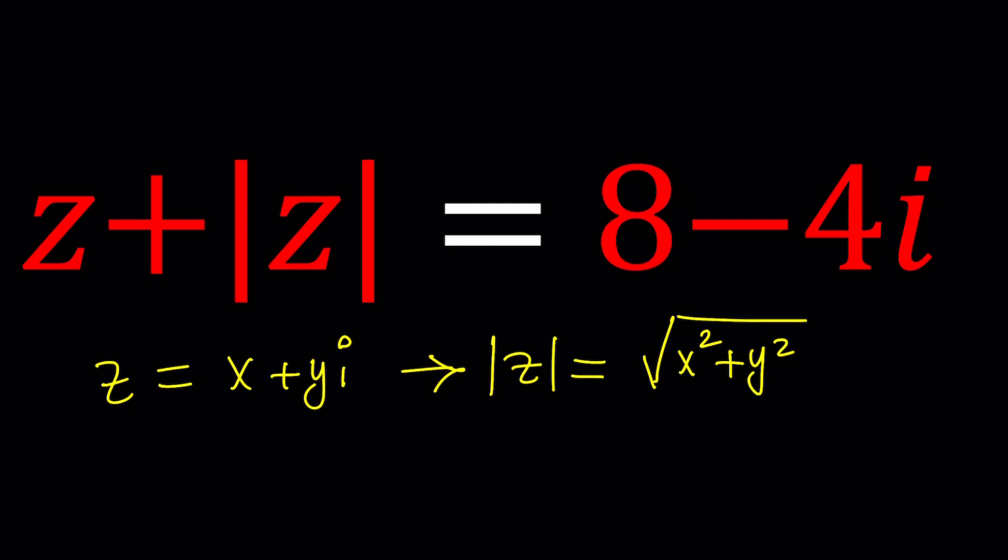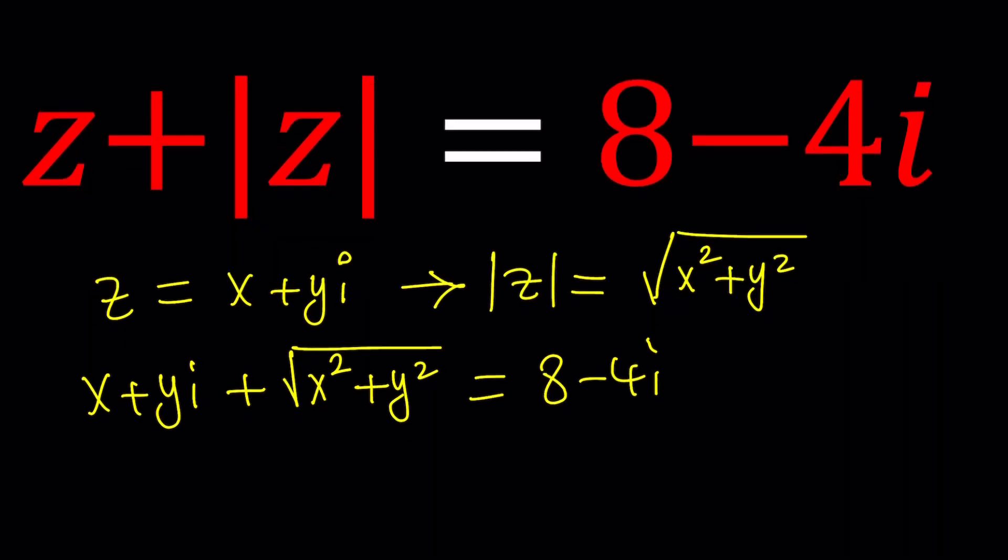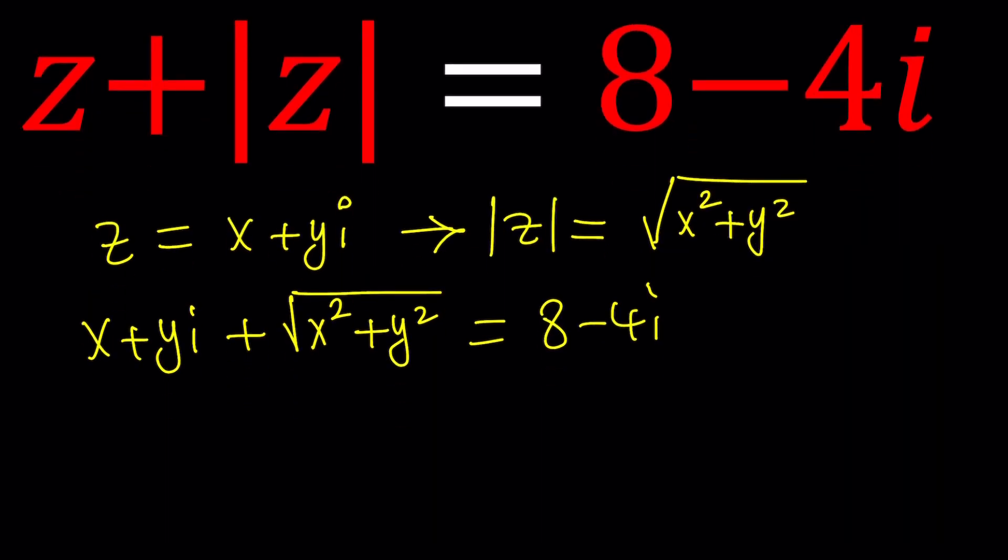So, let's go ahead and plug it in. Z will be replaced with X plus YI. And absolute value of Z is going to be replaced with the square root of X squared plus Y squared. And this whole thing is equal to 8 minus 4I. Make sense? We've got an equation with two variables. But we only got one equation? No. Actually, this is a special type of equation. You get two equations from here. Why?